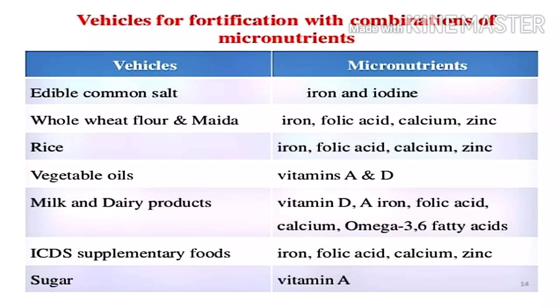In rice, we can add iron, folic acid, and calcium. For whole wheat flour, iron and folic acid support blood health, and calcium supports bone health. Vegetable oils are also used as fortification vehicles.